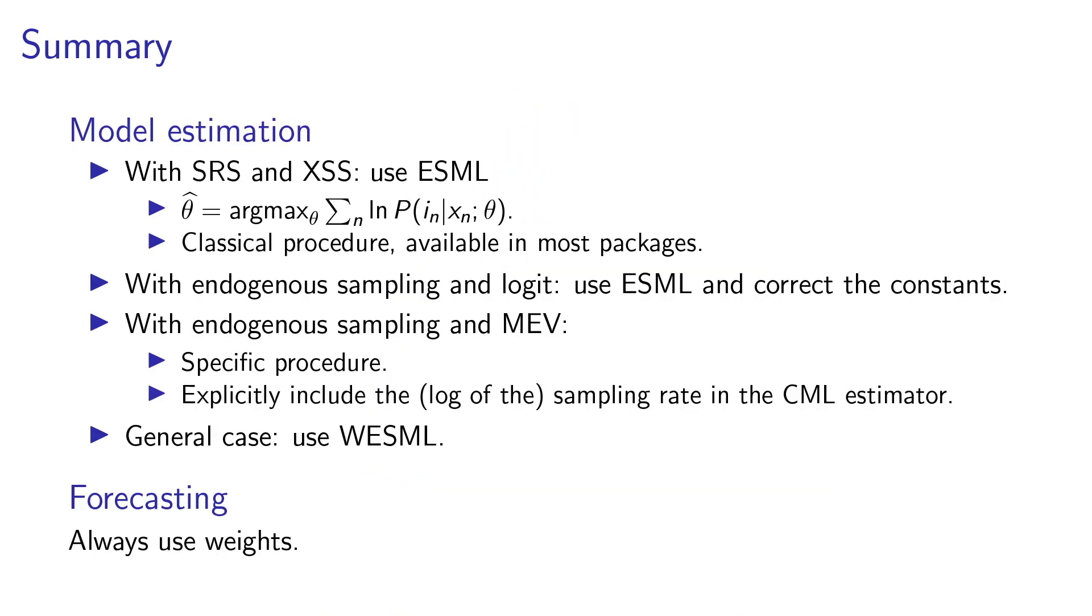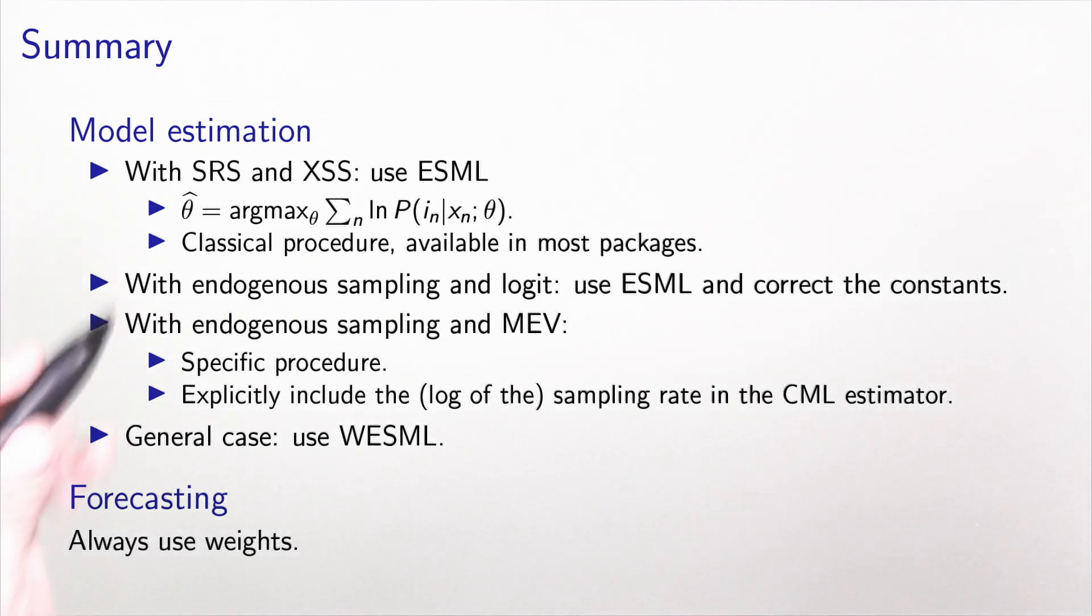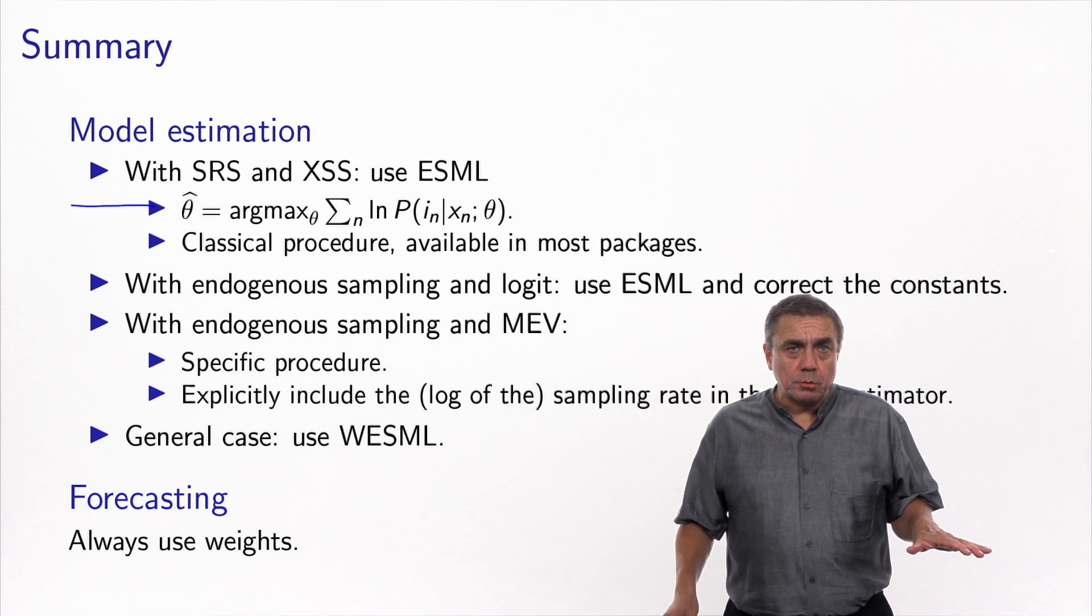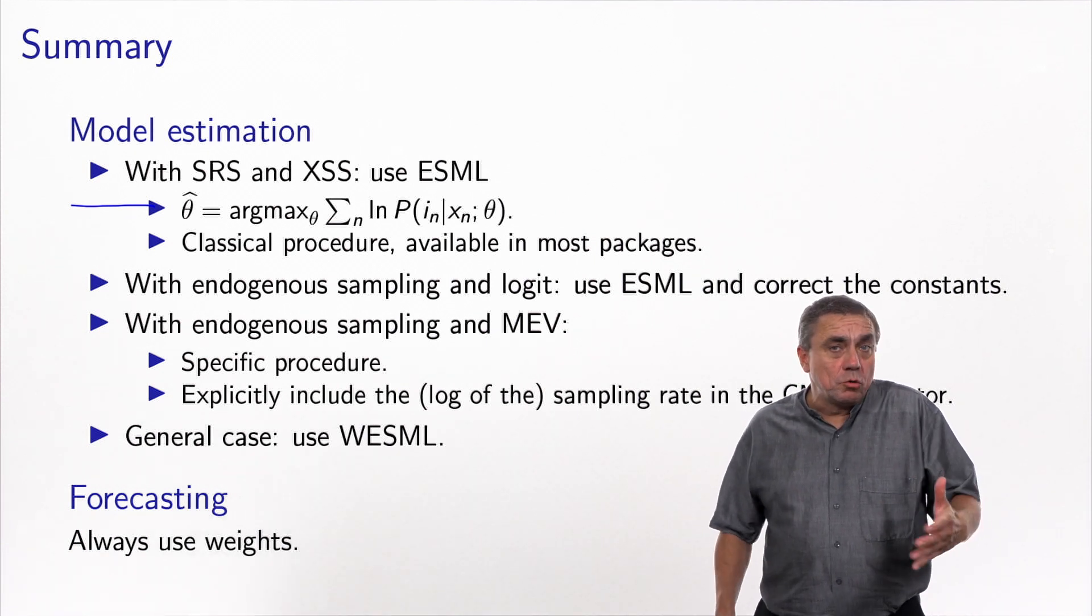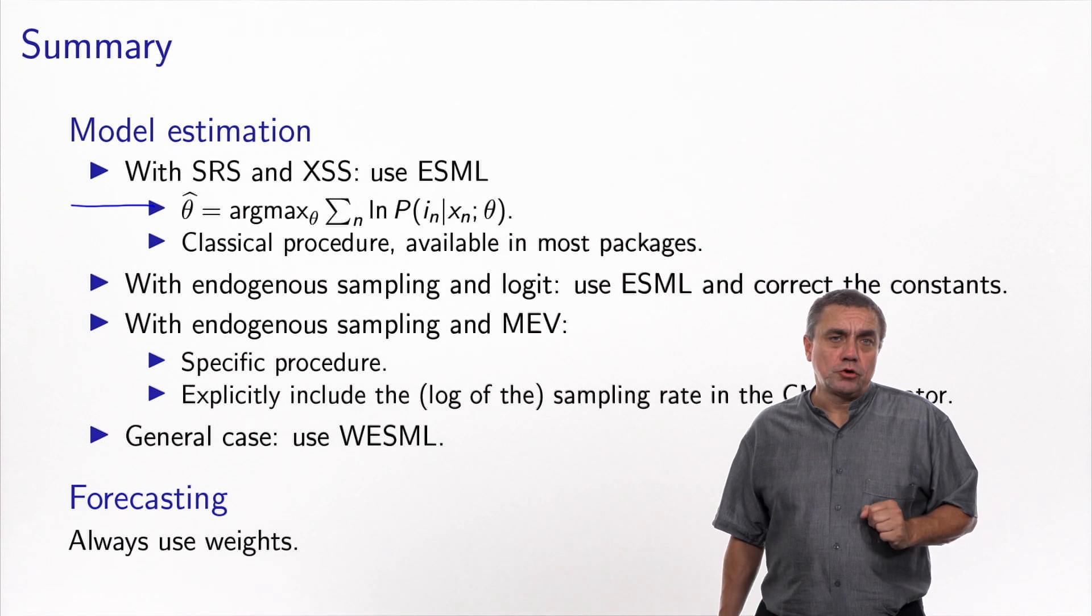And these are the conclusions that we have reached. If your sample is simple, which I told you never occurs in practice, or is exogenous, in this case you can use this estimator that we have been using from the beginning, that I call here ESML, Exogenous Sample Maximum Likelihood. This is simply this formulation. We solve the maximization problem where, for each individual, we calculate the log of the choice probability. This is a classical procedure, and this is available in most software packages designed to estimate choice models.